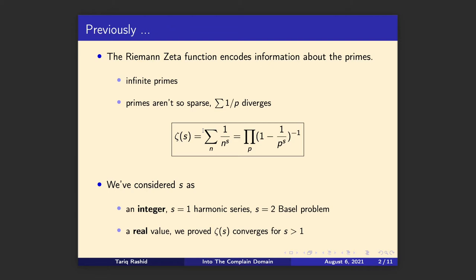We proved that the zeta function converges for s greater than 1. It doesn't converge at s equals 1 (the harmonic series), but it does for 1.1, and we showed it converges all the way down to but not including s equals 1. So we looked at s as a real value, not just an integer. The next step is to think of s as a complex number, so the zeta function becomes a function over the complex domain — and it was Riemann who first took it in that direction.